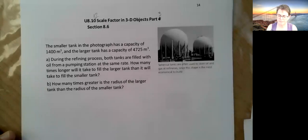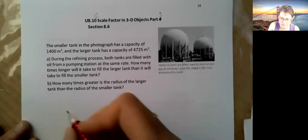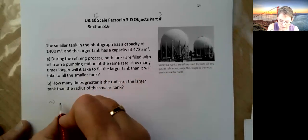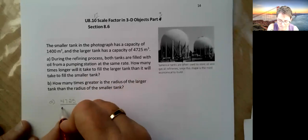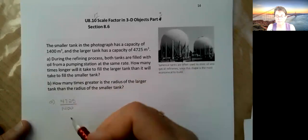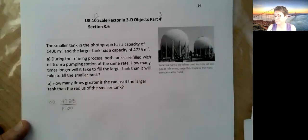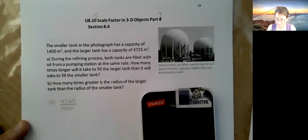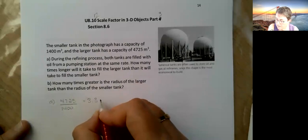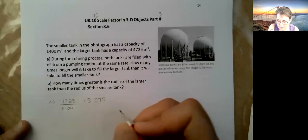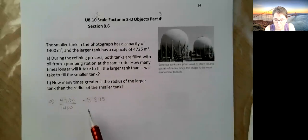Well, that seems pretty simple. All I need to do, so for part A, is go 4725 divided by 1400. Essentially, how many times does 1400 go into the big one? So 4725 divided by 1400, that's 3.375. So the little one will fill over three times before the big one is filled.